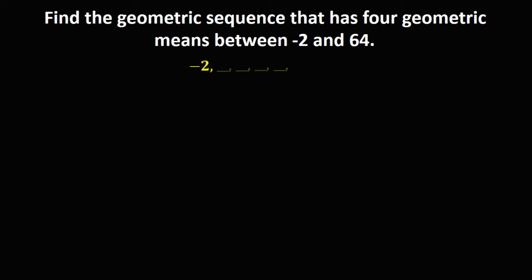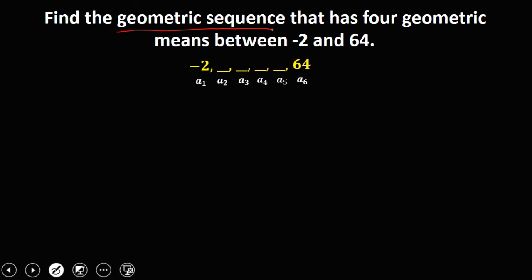To solve this problem, to find the 4 geometric means — that's a sub 2, a sub 3, a sub 4, and a sub 5 — since this is a geometric sequence, we're going to use the formula: a sub n equals a sub 1 times r to the power n minus 1.